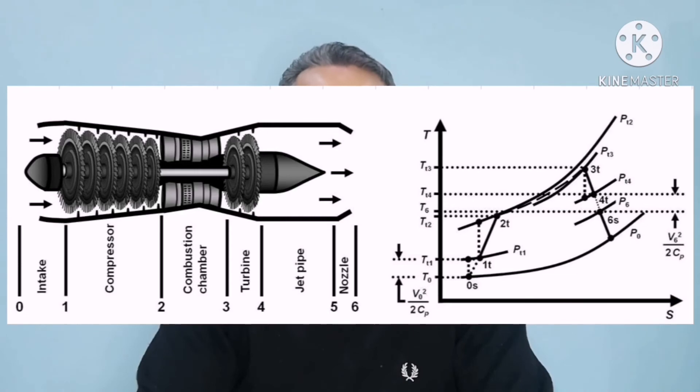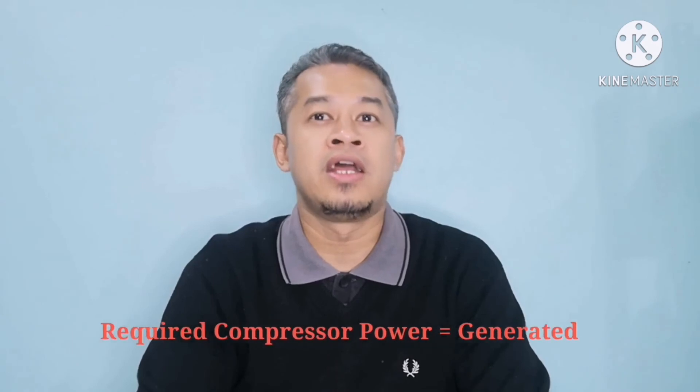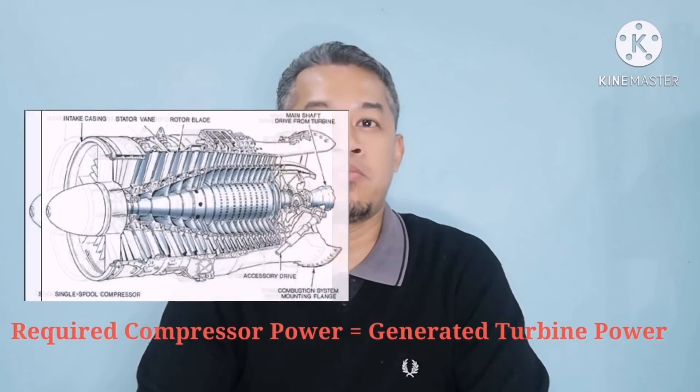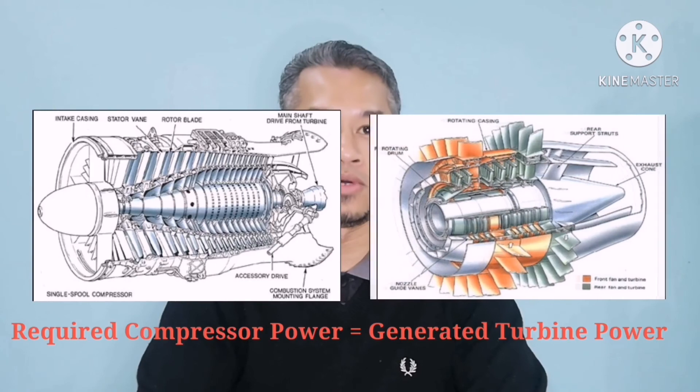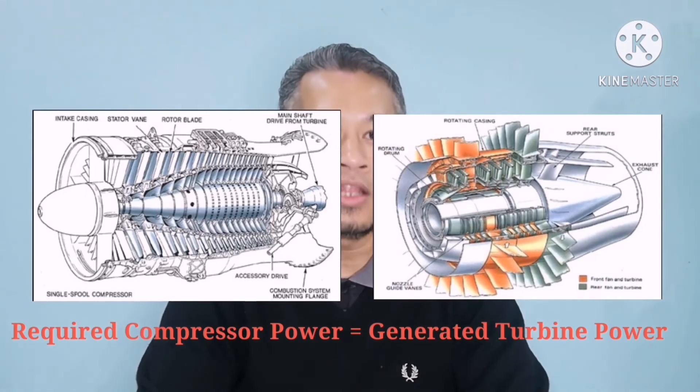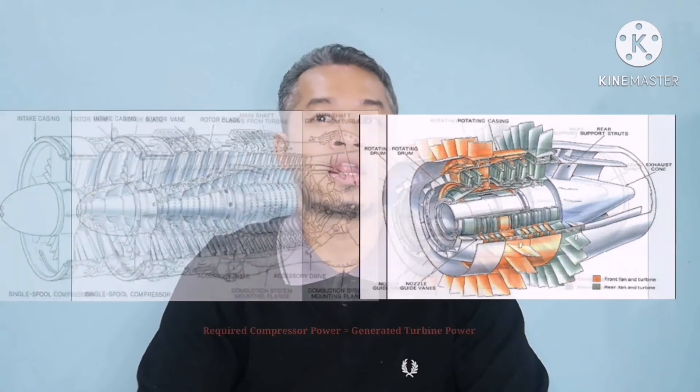In a simple turbojet engine, assuming that the turbine only provides the power required by the compressor, and applying the conservation of energy, it gives that the required compressor power would be equal to the generated turbine power.